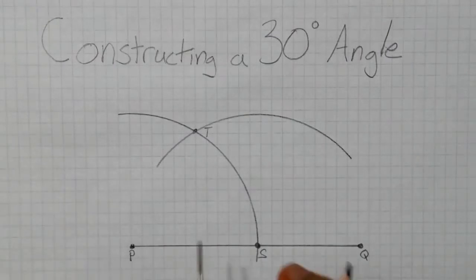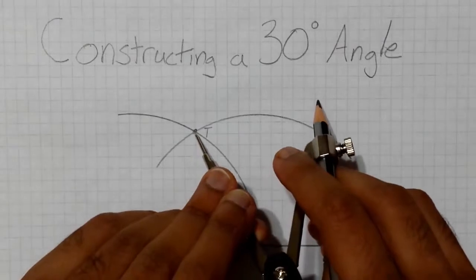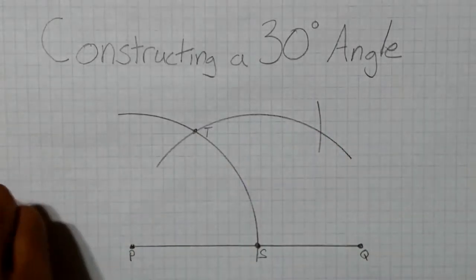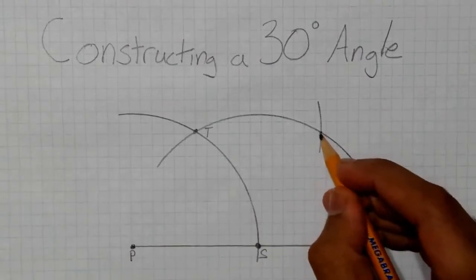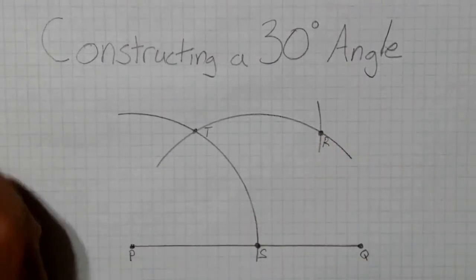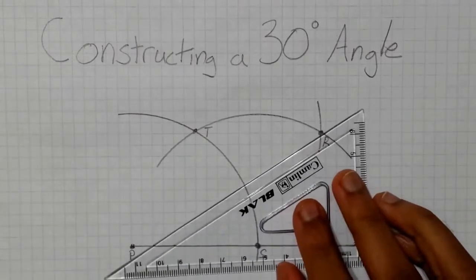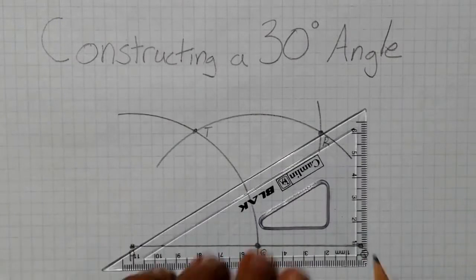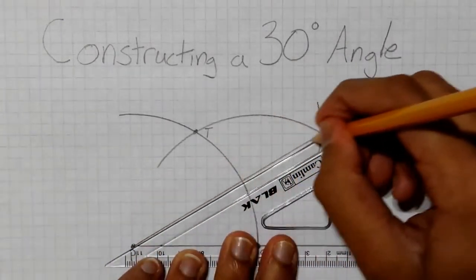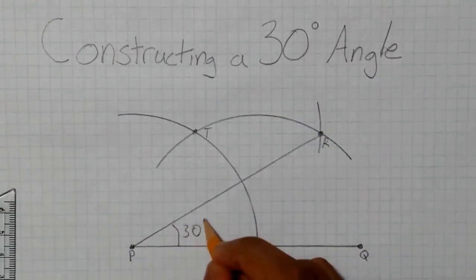Then again, using the same length on the compass, place the tip on point T and draw a small arc. Label this point point R. Then using the straight edge, connect points P and R to form a 30 degree angle.